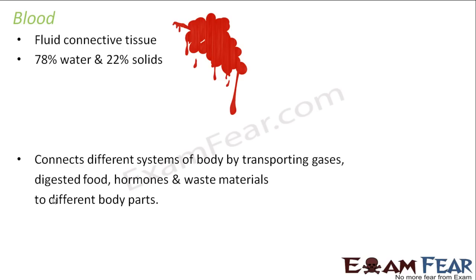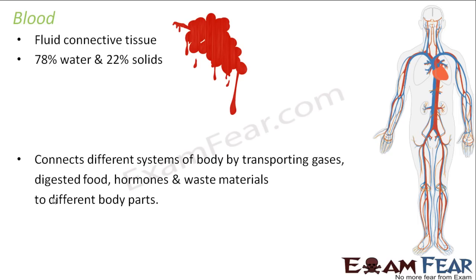A connective tissue is a tissue that connects different body parts. Blood actually helps in transporting food or waste materials from one part of the body to another. For example, to the place where excretion has to happen it takes the waste materials there; to different body parts which need food it transfers food there. It transports gases, hormones, and other chemicals to different parts of the body. So blood actually connects different parts of the body and is considered a connective tissue — blood is flowing everywhere, connecting all different parts.